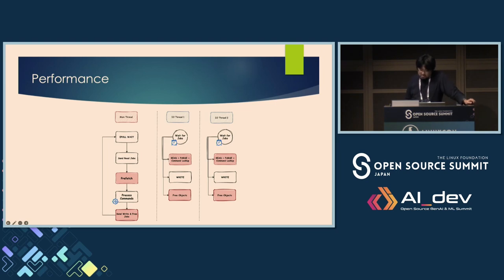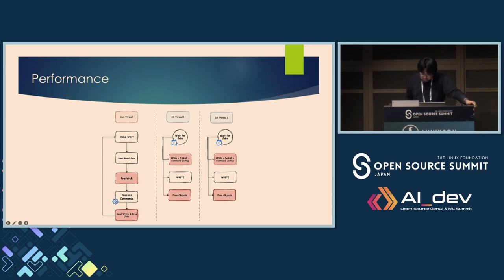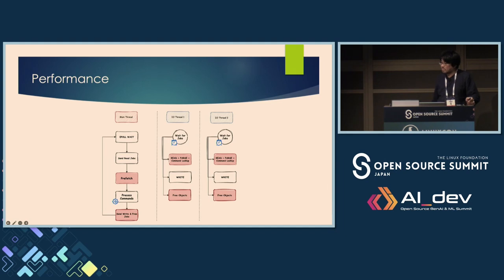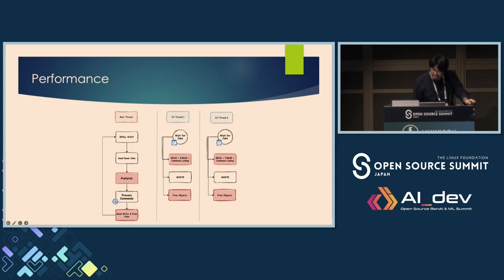Combined with our asynchronous I/O architecture, these enhancements deliver significant performance improvements. The final result is up to 230% improvement — meaning roughly 2.5 times total throughput compared with Valkey 7.2.